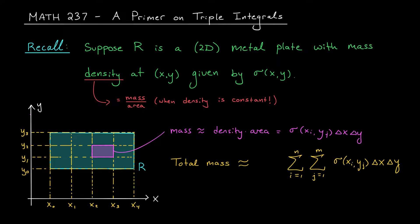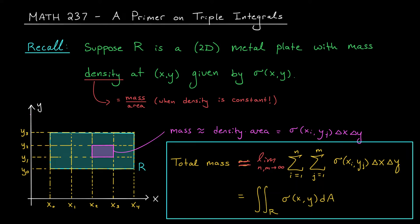Of course, these approximations will get better and better when we use smaller and smaller pieces, so the exact mass of the plate should be the limit of these sums. Does this look familiar? It should. This is exactly our definition for the double integral of σ over R. So there you go. The double integral of the density function computes the total mass of the plate.